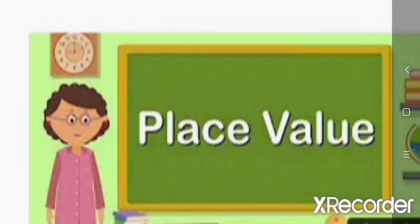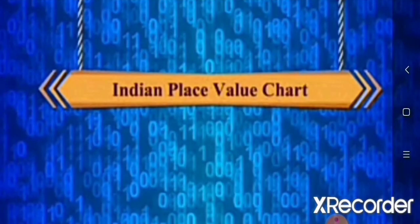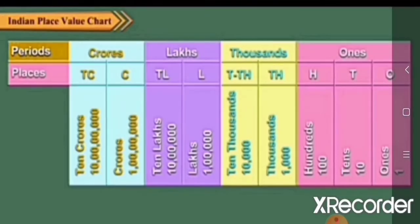Today's topic is the place value chart. In the place value chart we have two types: one is the Indian place value chart, and another one is the international place value chart. In the Indian place value chart, periods and places are given here.